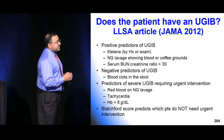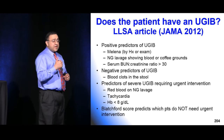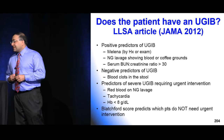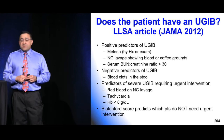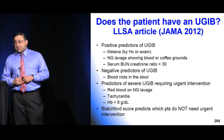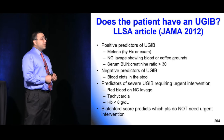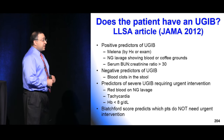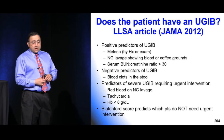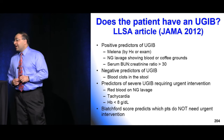Positive predictors of upper GI bleed: melena, coffee grounds on NG lavage, and importantly — a BUN-to-creatinine ratio over 30. That last one is not intuitive, so circle it. Negative predictors of upper GI bleed: blood clots in stool or bright red blood. Predictors requiring emergent endoscopic intervention: red blood on NG lavage, hemodynamic instability especially tachycardia, and hemoglobin already under 8.